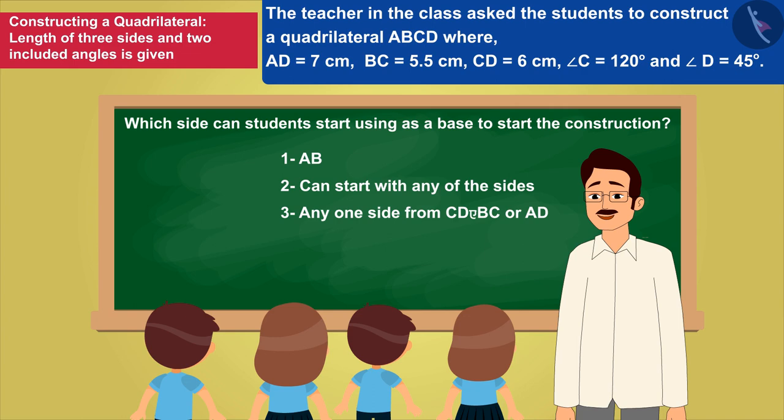Some children think that if the name of the quadrilateral is ABCD, the side AB should be used as the base to start the creation. So they choose option 1, but it is a wrong understanding.